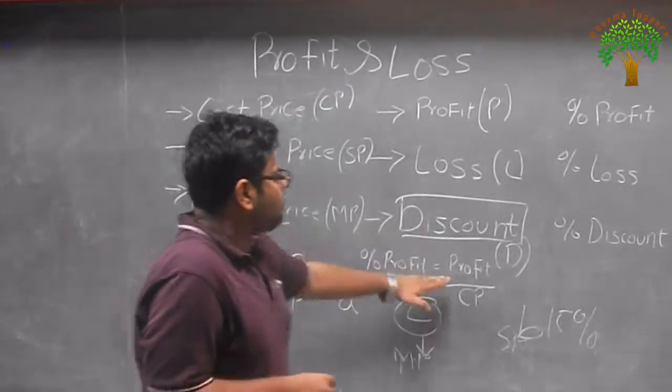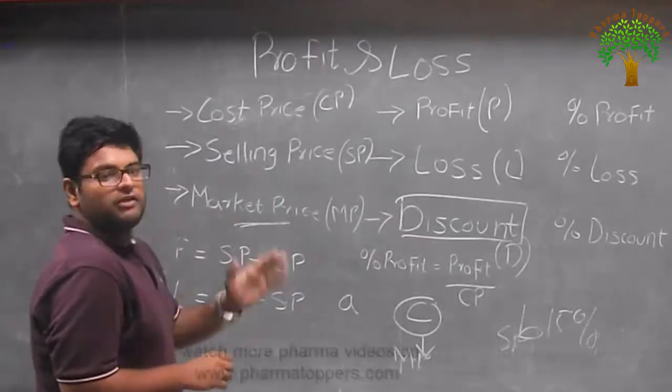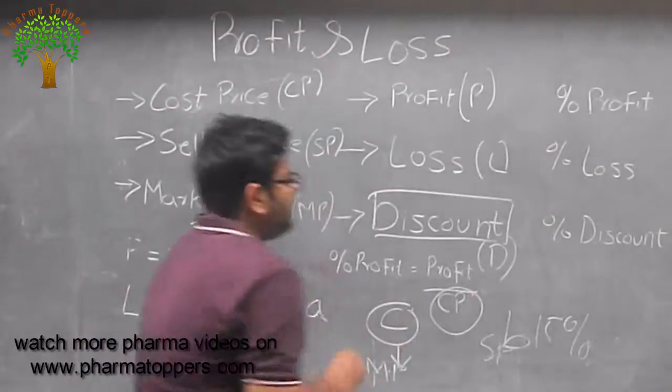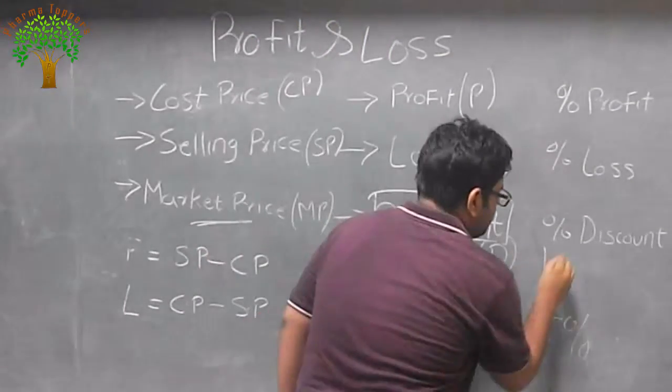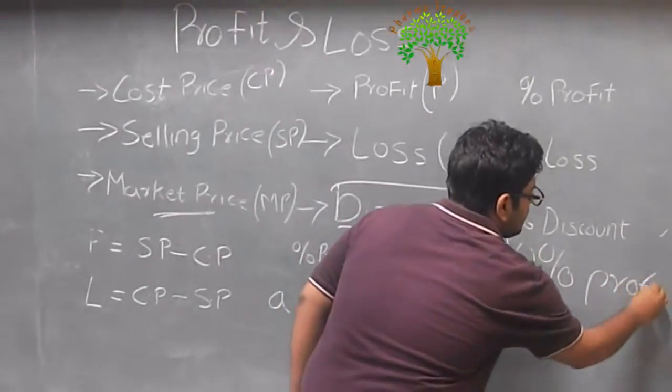The percent profit is profit upon CP. The main thing we have to see that whenever they talk about the profit percentage upon profit loss CP should be considered. It is never even if a person is given it is a 10% profit and we get a selling price.